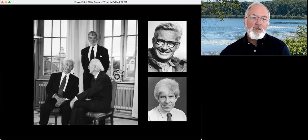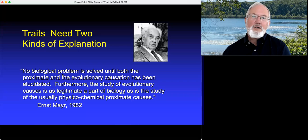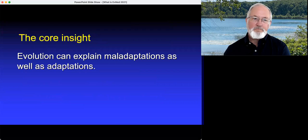Ernst Mayr inspired all of us with a very simple idea. He pointed out that there are two kinds of explanation needed for everything in biology. One, proximate explanation about the mechanism and how it works, and also an evolutionary explanation about how it got to be the way it is. The core insight that got a lot of work going in evolutionary medicine is recognizing that maladaptations need explanation just as much as adaptations.